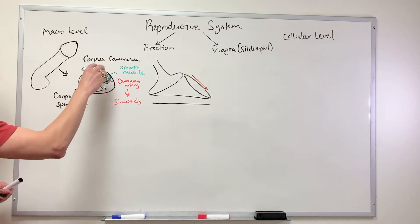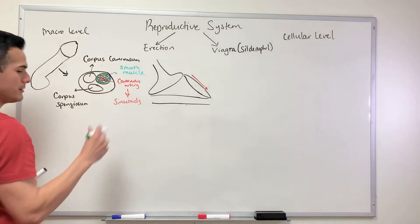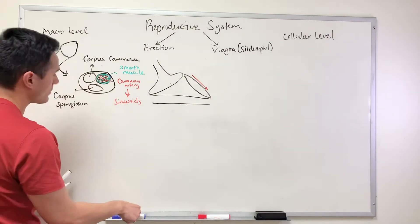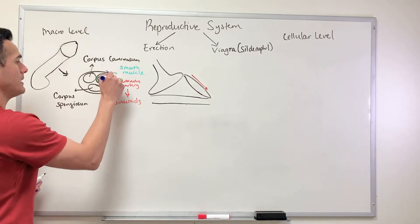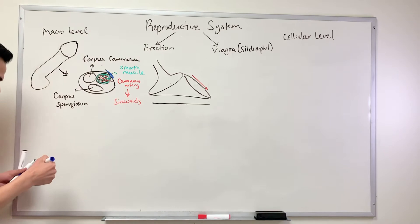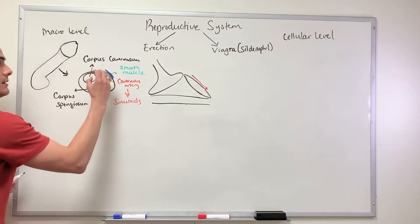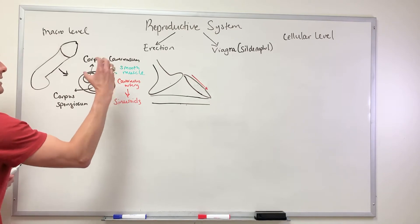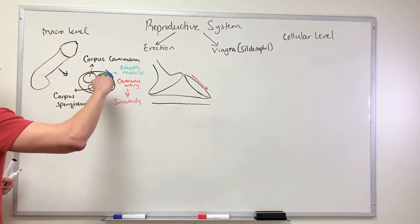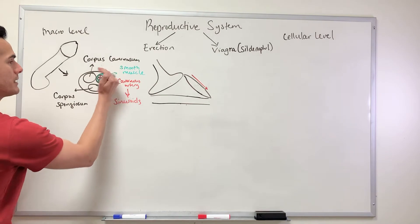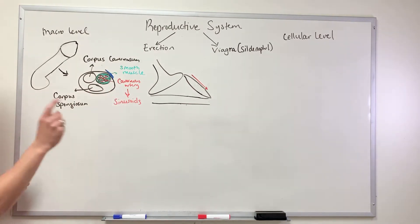Some of the veins will be blocked due to increasing the size of the diameter of the corpus cavernosum. It's pushing out against these veins to prevent backflow so the penis stays erect.